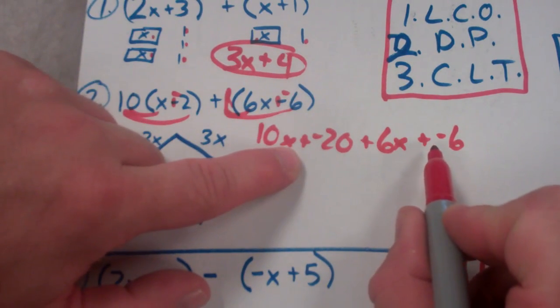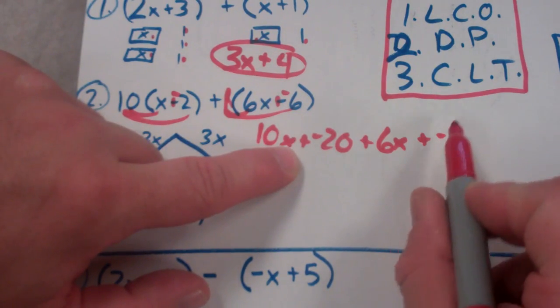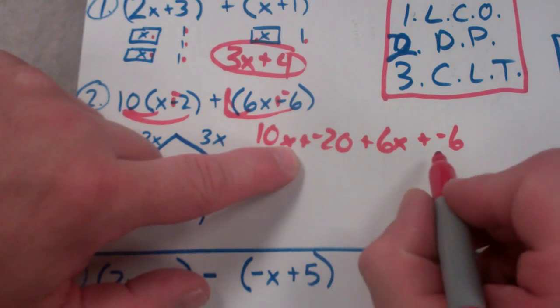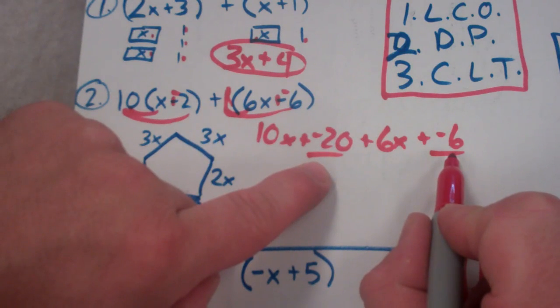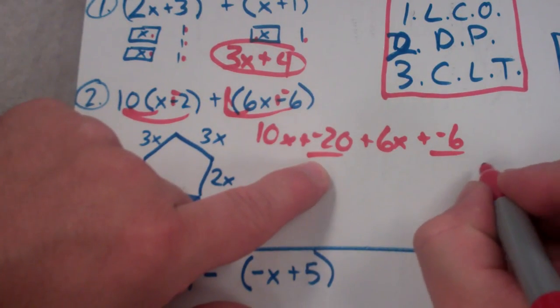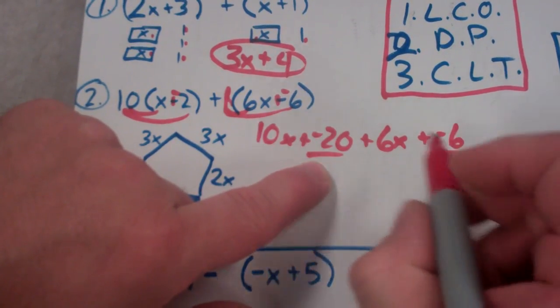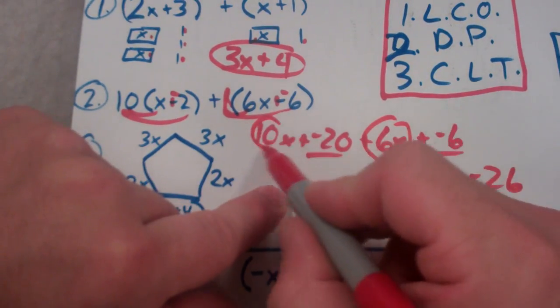Now that it's all addition, that's one reason we do it. So we can use the commutative properties. One reason we do that leave change opposite. I'm going to get my like terms together. I have these two constant terms. Both of them are negative. So add and use that same sign. I'd get negative 26.